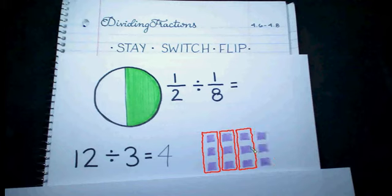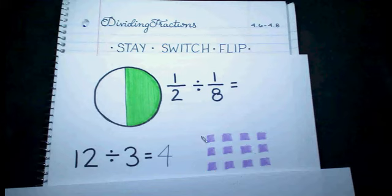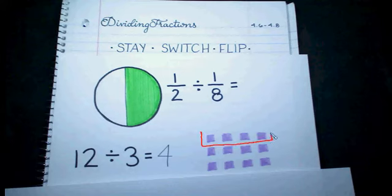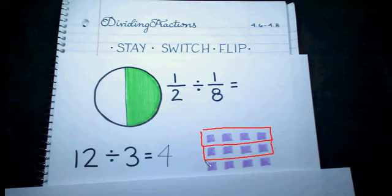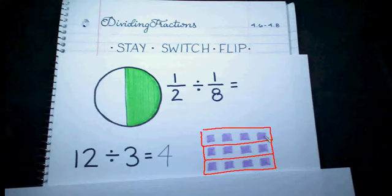The other way to interpret this would be: if I make 3 groups, how many will be in each group? So I'm just going to make 3 big groups of even size. And in those 3 groups, I have 1, 2, 3, 4 things in each group.